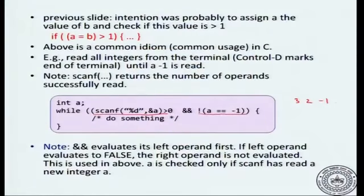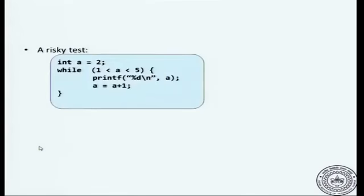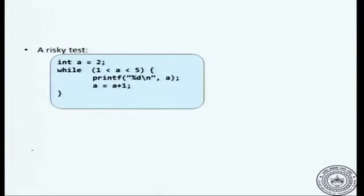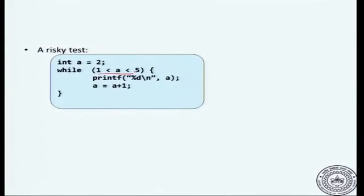If I know that this expression is false, then there is no need to evaluate the second operand because I know that the whole expression is going to be false. Here is a common mistake that people make: because this is similar to mathematical notation, when you want to check a condition that a is between 1 and 5, what happens if you write 1 less than a less than 5, as we do in mathematics?